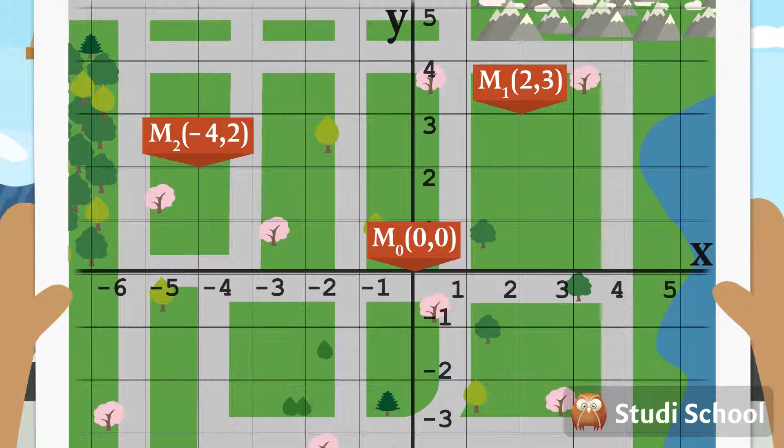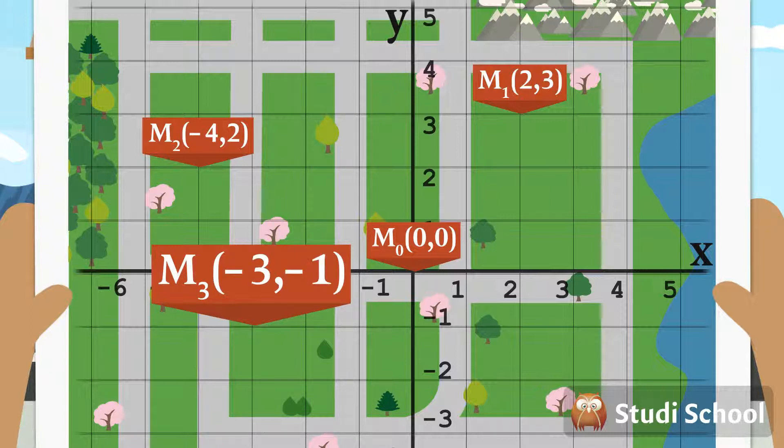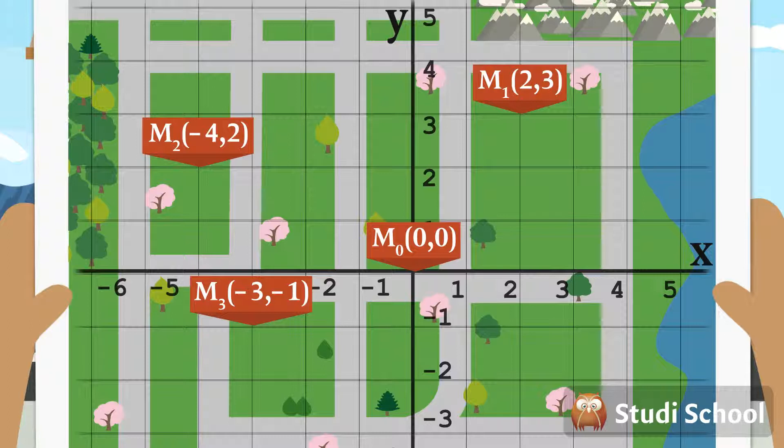The closest shop to Mary is located at point M3, which has coordinates of -3 and -1. To find this point, we first have to locate each coordinate on the X-axis.